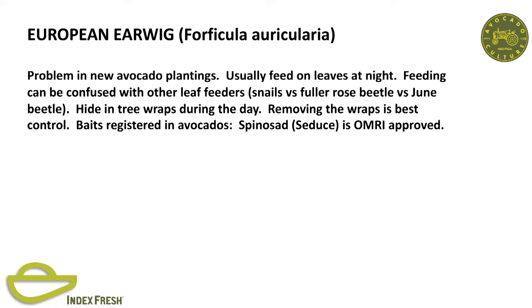Earwigs: usually in new avocado plantings. They like the tree wraps and feed at night. If you're not aware of where they come from, you could see damage and think you've got looper, or fuller rose beetle, or snails—but you shake the wrap and you've got 50 to 100 earwigs in your tree wrap. Removing the wraps is the best control; there is a bait if you need to bait. Make sure you whitewash the exposed tissue when removing those wraps.